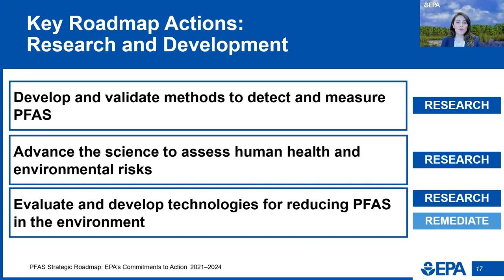Over the next few slides, I'll cover some program-specific commitments. Science and research are the foundation of EPA's work on PFAS, and EPA is working to improve scientific understanding in three primary areas. First, developing and validating methods to detect and measure PFAS in the environment. Second, advancing the science to assess human health and environmental risks from PFAS — including developing human health toxicity assessments for additional PFAS, identifying PFAS sources and pathways, and characterizing how PFAS exposure may contribute to cumulative impacts on communities. Third, evaluating and developing technologies for reducing PFAS in the environment, informing drinking water and wastewater treatment, contaminated site cleanup, air emissions controls, and end-of-life materials management.